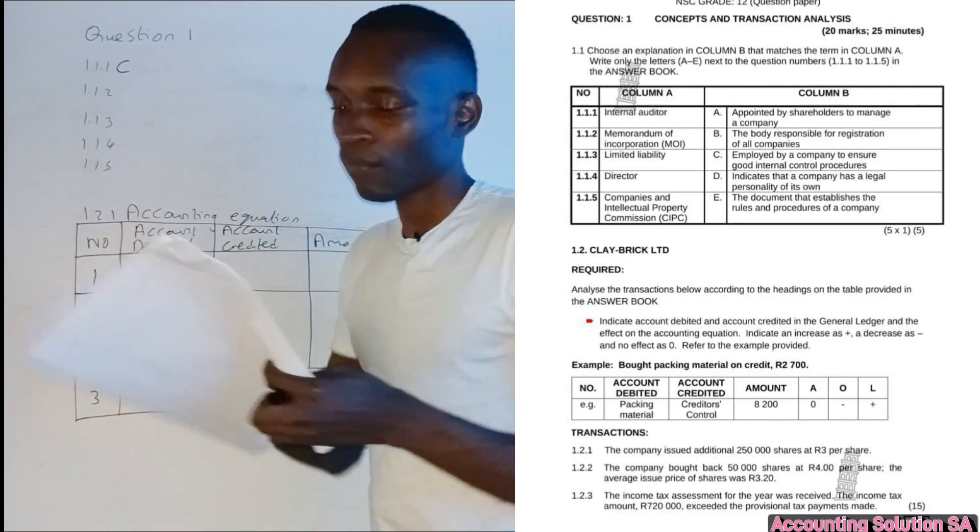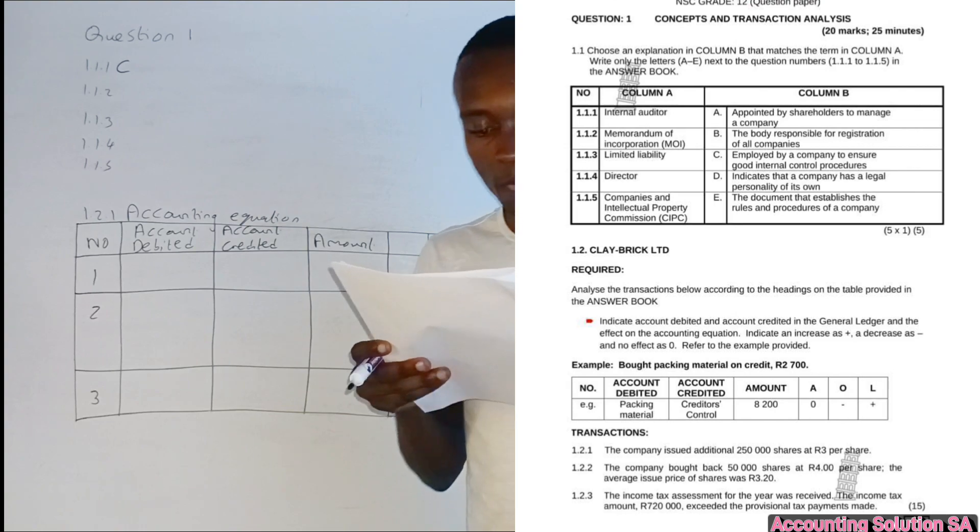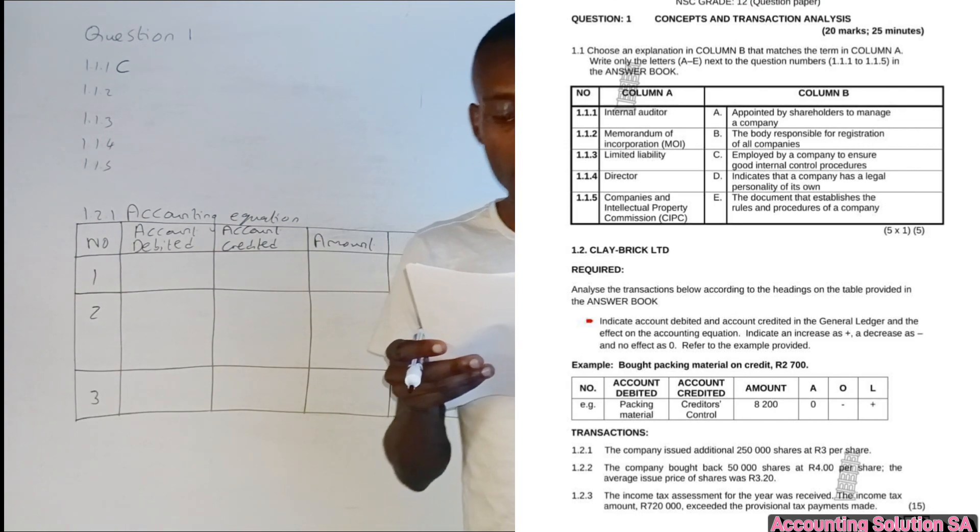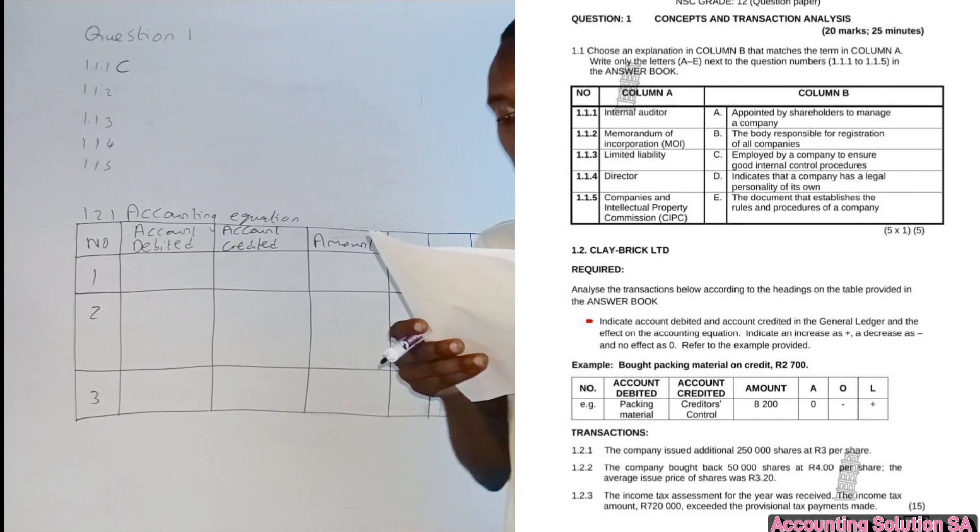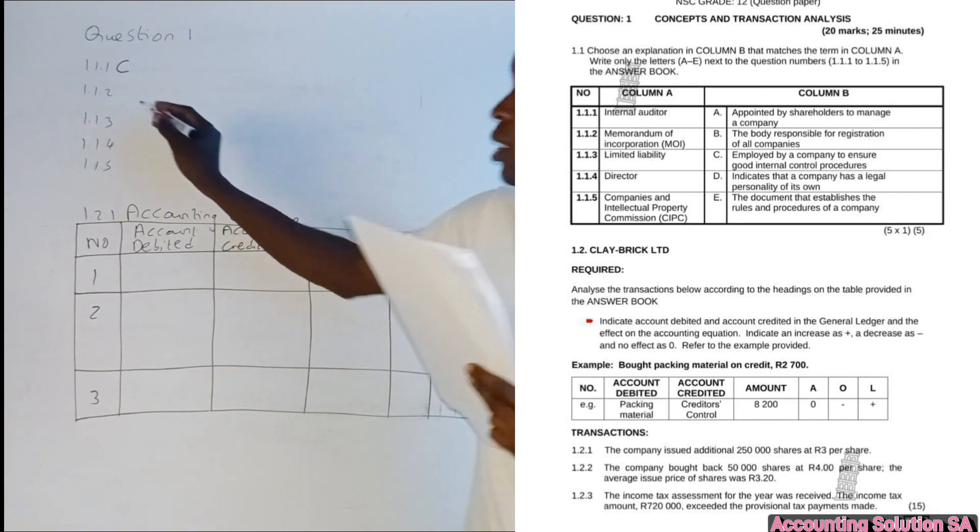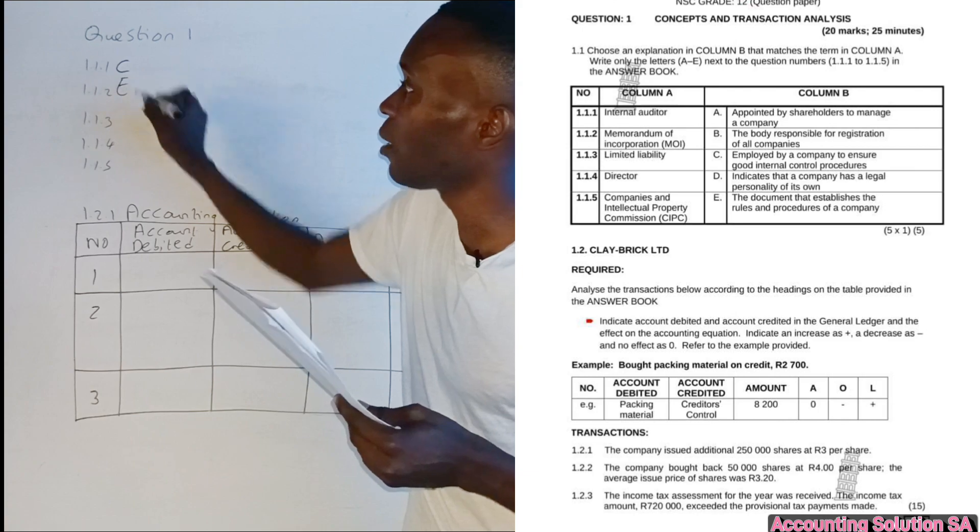Number 1.1.2, memorandum of incorporation. The answer for this one is number E. The documents that establish the rules and procedures of the company is called memorandum of incorporation.